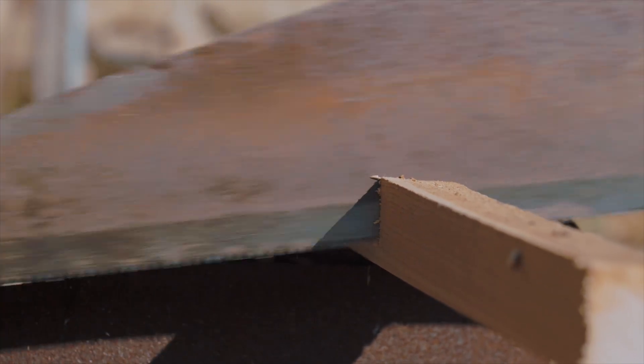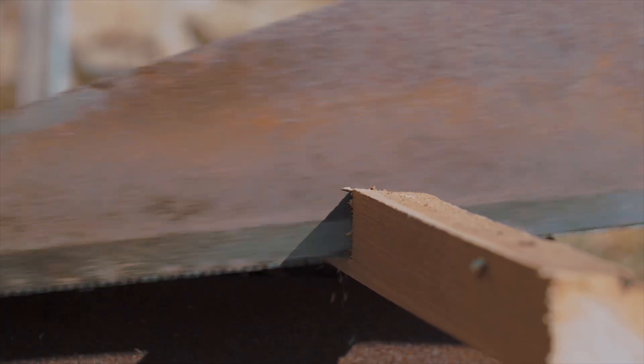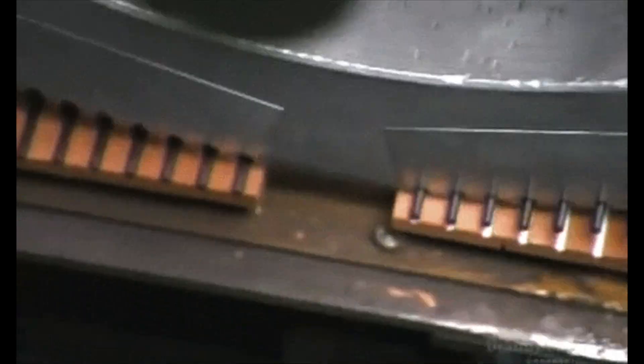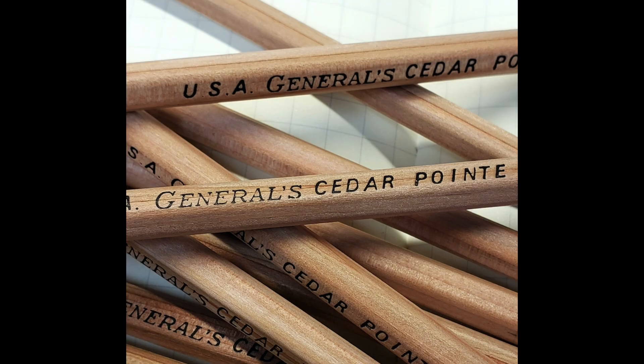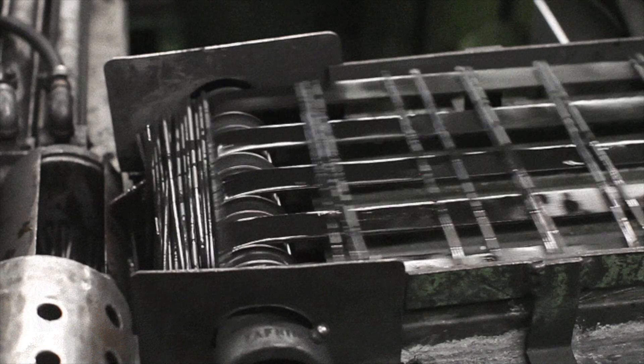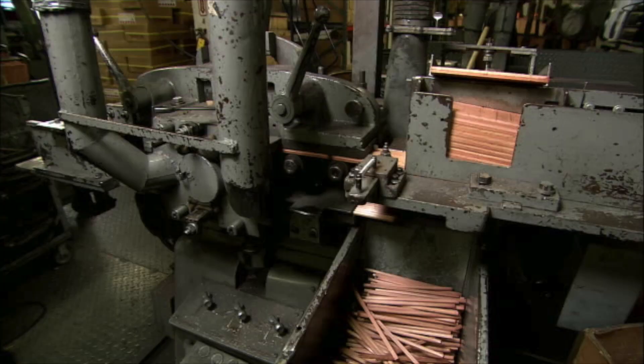Now, let's peer into the fascinating process that brings a pencil to life. It all begins with the careful selection of cedar wood, chosen for its smooth texture and durability. The wood is meticulously inspected and prepared before reaching the manufacturing facility, where it meets its graphite counterpart.